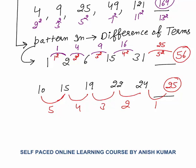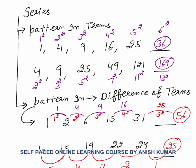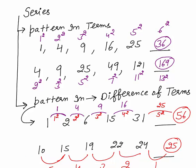Broadly summarizing: in series there are only 2 kinds of questions — no confusion, no cramming, no memorization needed. First kind: you find the pattern in the terms. Second kind: you find the pattern in the difference of terms. That is all — that is the basics of number series. Now series can also be in letter form, so let's discuss what letter series is.